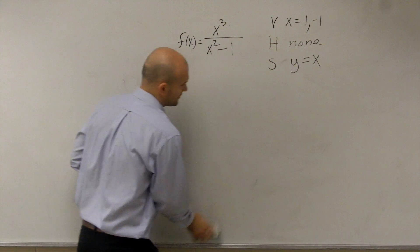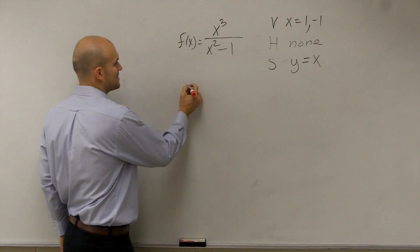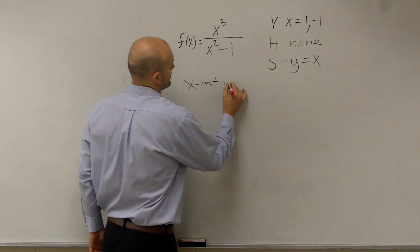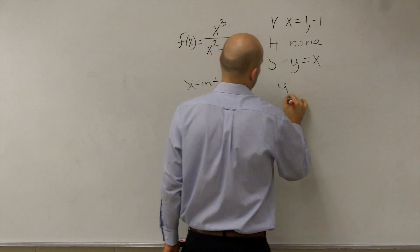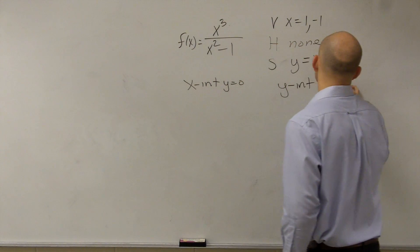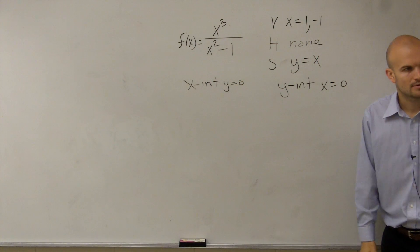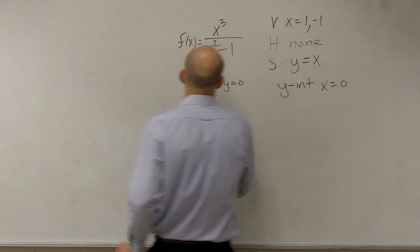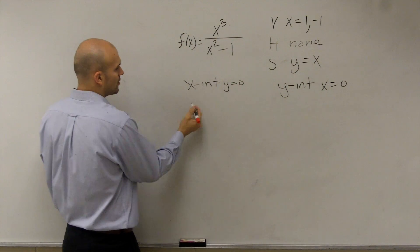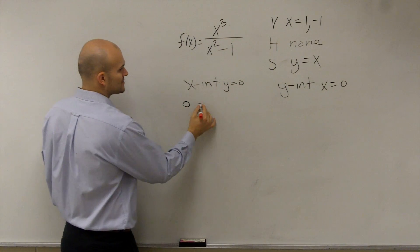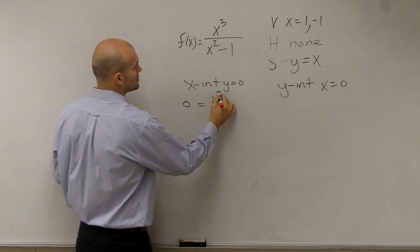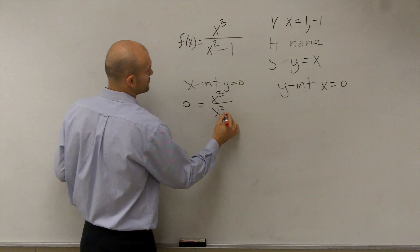So the next thing that we want to do then is find the x and y intercepts. So remember, x intercept, y equals 0. Y intercept, x equals 0. So we just plug them in. Or y equals 0, or in this case, f of x equals 0 since we're dealing with functions.